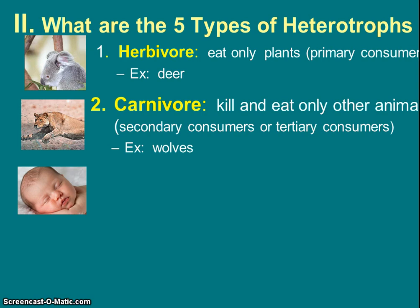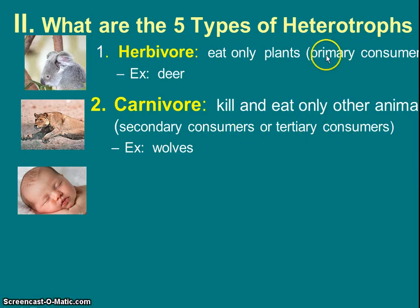Then we have carnivores. Notice the prefix in carnivore is 'carne,' meaning meat — they kill and eat other animals. Carnivores are always going to be secondary or tertiary consumers; they are never the first level consumer like herbivores. Herbivores are the first level because they eat plant matter.